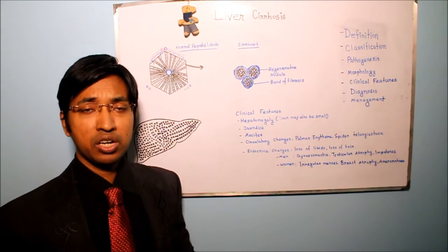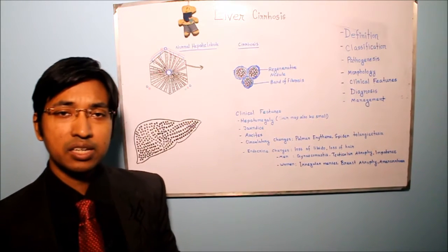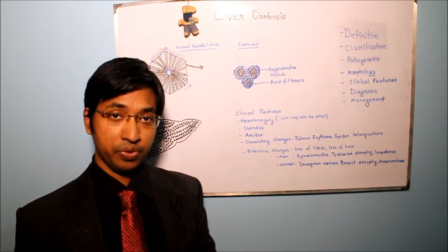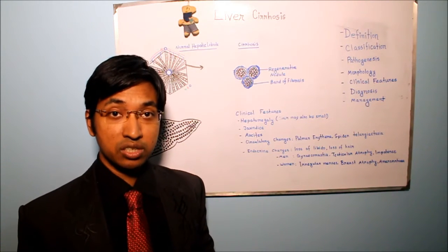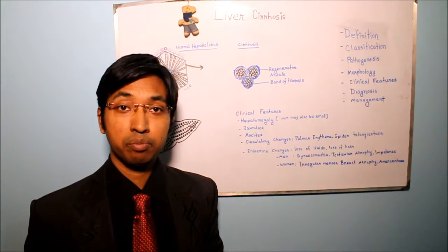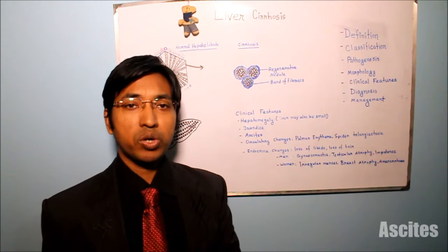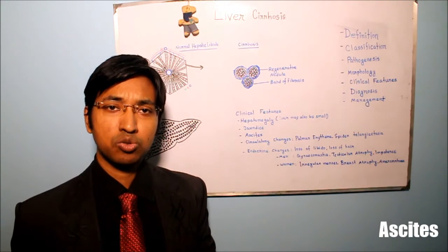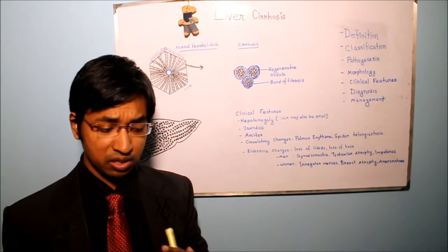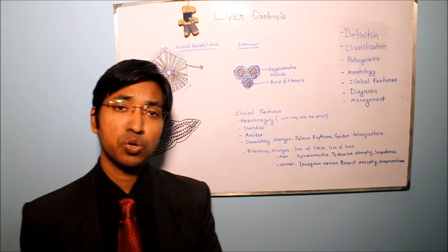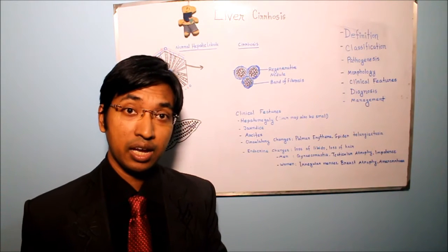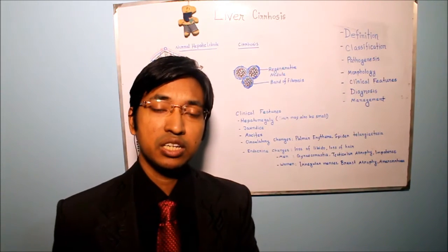Another interesting clinical feature in liver cirrhosis is abdominal pain. Initially the liver becomes enlarged, so there is hepatomegaly, and that enlarged liver may stretch the Glisson's capsule that covers the liver, leading to abdominal pain. Another cause of abdominal pain in liver cirrhosis is ascites — accumulation of excess fluid in the peritoneal cavity. Ascites may develop as a complication, as the pressure in the portal circulation becomes elevated, leading to portal hypertension.